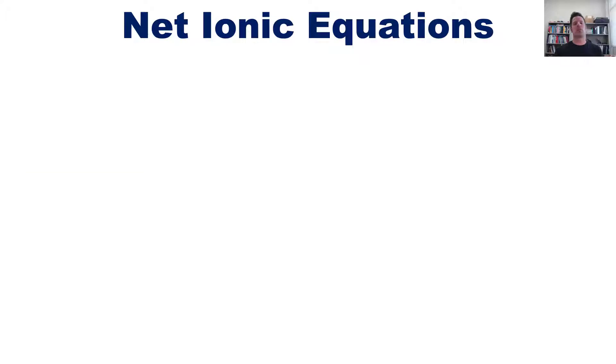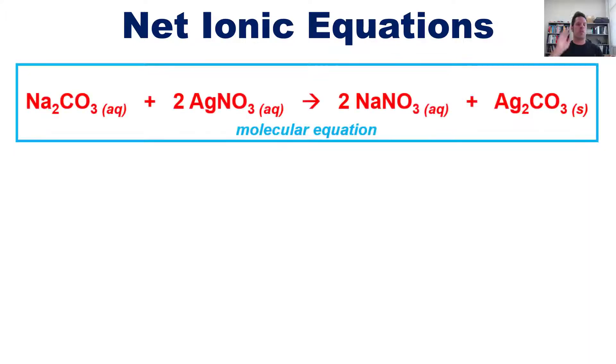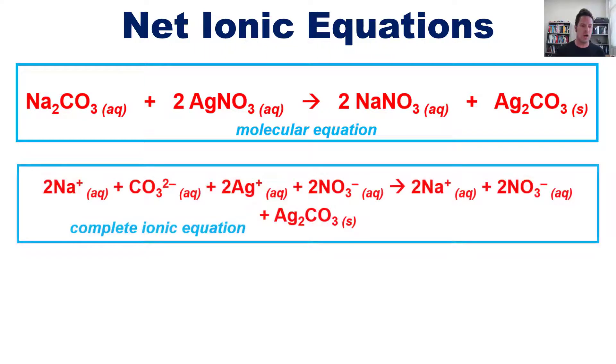To review, then, if we write our precipitation equation in this form without separating out cations and anions, it's called the molecular equation. If we write it in this form, where we've separated out everything and we keep everything shown, it's called the complete ionic equation.